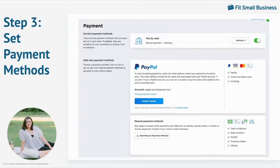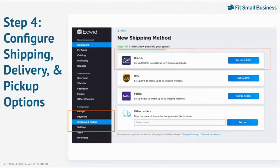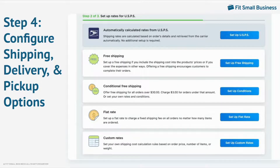After setting up your payment methods, the next step is configuring your shipping, delivery, and pickup options. Ecwid provides real-time shipping rates from UPS, USPS, and FedEx. To set this up, go to your control panel under Configuration and click on Shipping and Pickup. Just choose which shipping method you will be going with and follow the prompts. In our trial store, we set up USPS, which gave us options to set up conditions for free shipping, custom rates, conditional free shipping, and even a flat rate shipping fee.